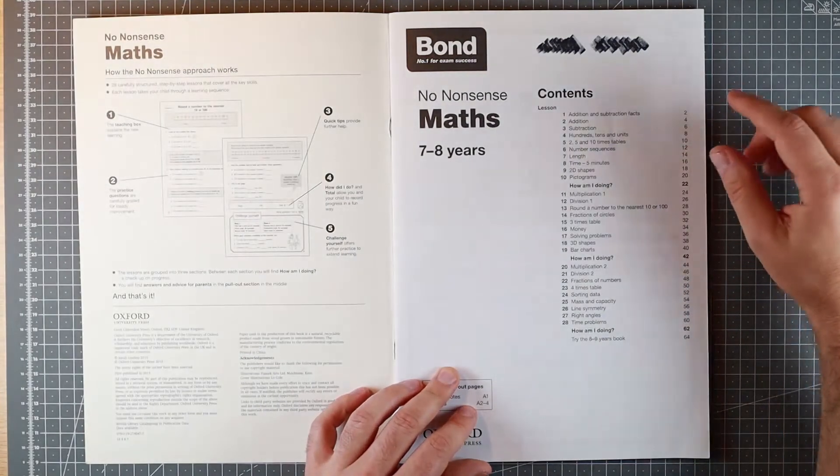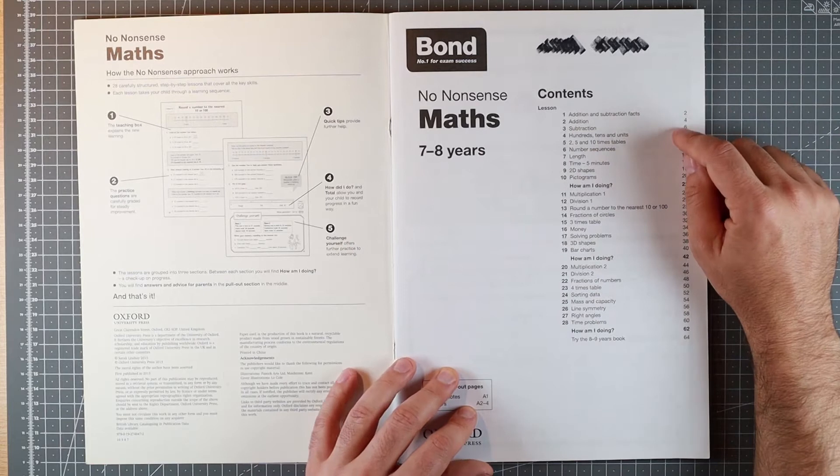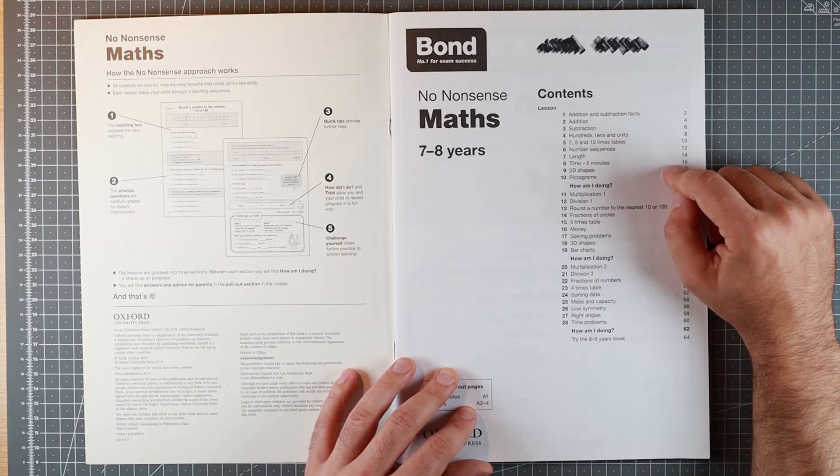Three sections in this book. Each goes through different topics: addition, subtraction, times tables, length, and some geometry in the first.